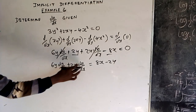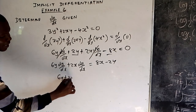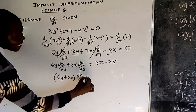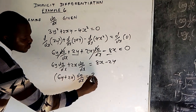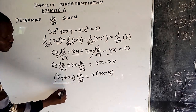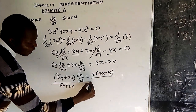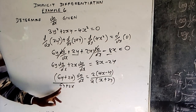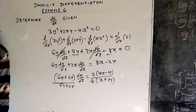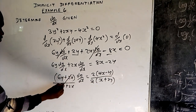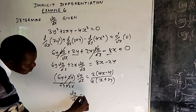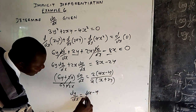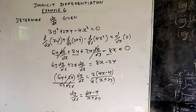So you factorize out dy/dx. We have (6y + 2x) dy/dx = 8x − 2y. Because 2 is a common factor, the right side is 2(4x − y) and the left side is 2(x + 3y). You divide both sides by 2(x + 3y), the 2s cancel, and you remain with dy/dx = (4x − y) / (x + 3y). You have determined dy/dx using implicit differentiation.